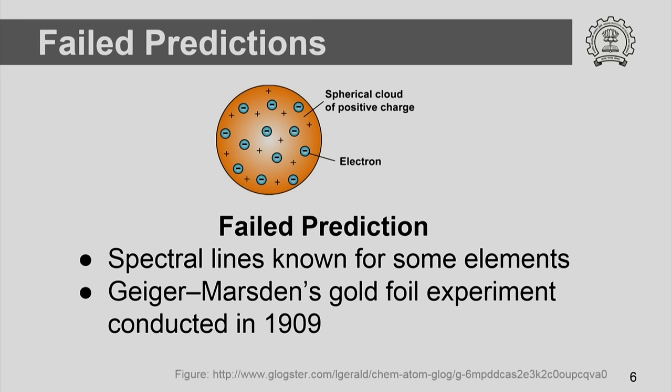Did it explain everything? Well, it did not. There were other observations at that point which could not be explained using Thomson's model. One of them was spectral lines, which were known for some of the elements — those could not be explained using this plum pudding model proposed by Thomson.